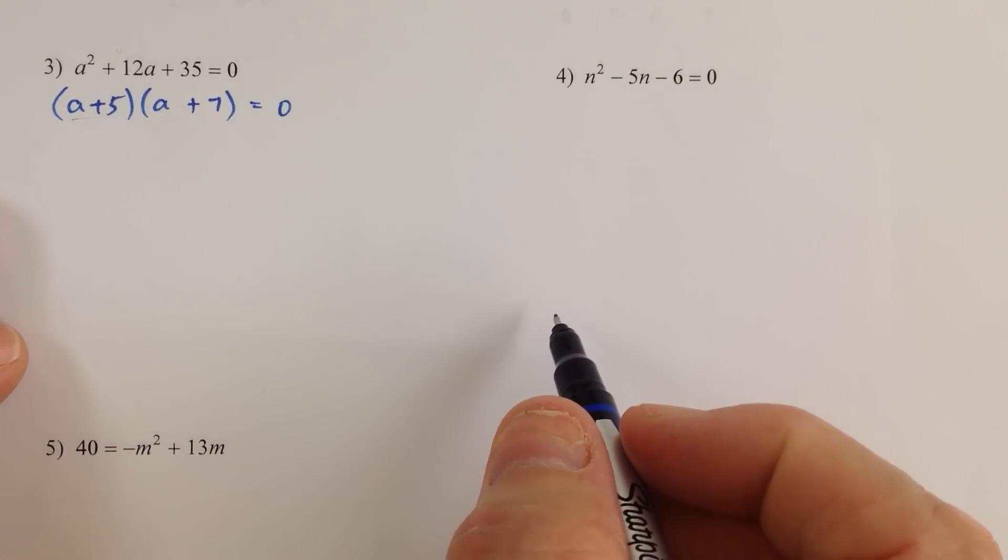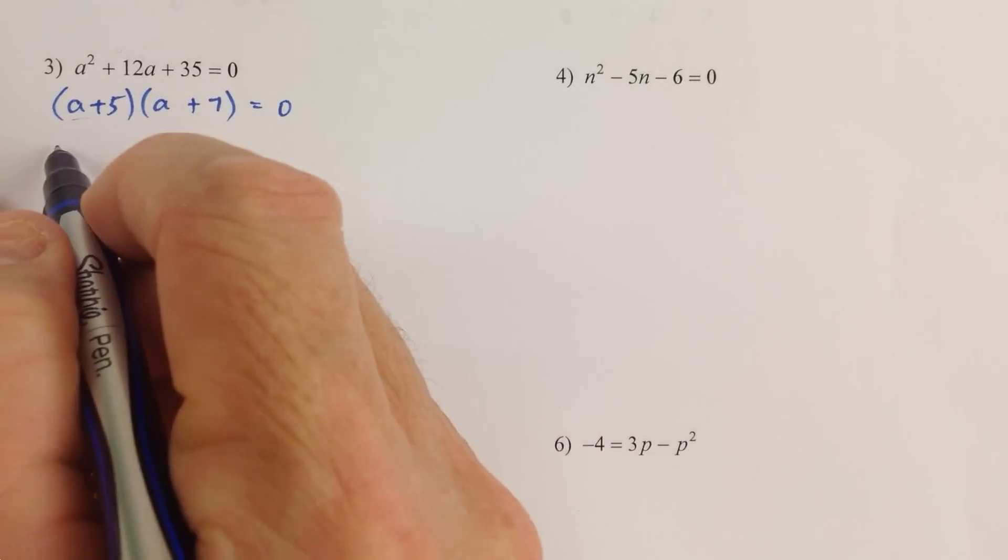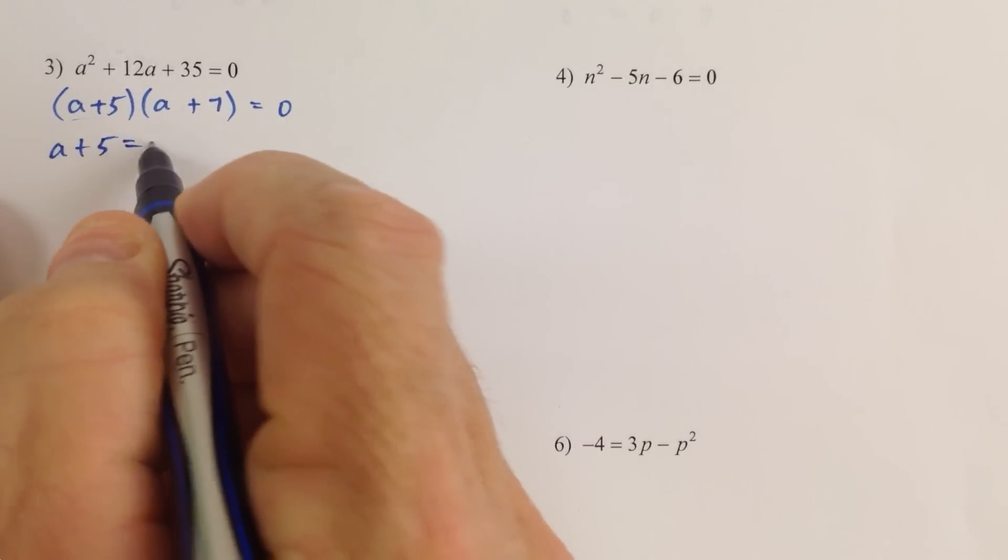And then we proceed like we did in the last example, where we have two factors equaling 0, we set each factor equal to 0.